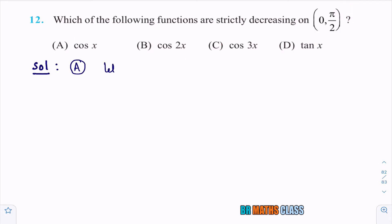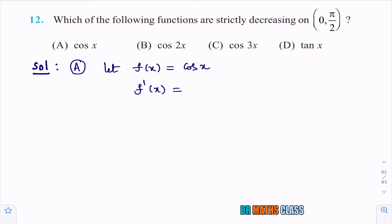Take the given function as f(x) = cos x. Differentiating, f′(x) equals the derivative of cos x, which is −sin x.